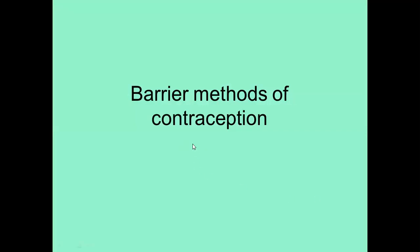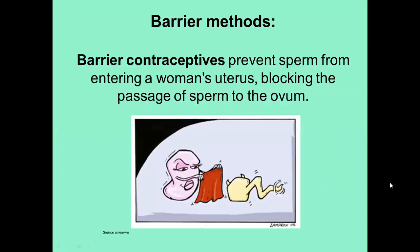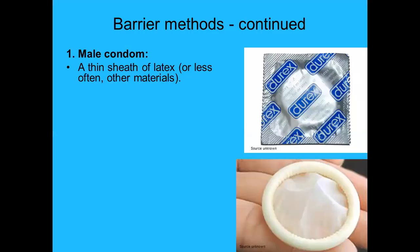We're going to look at barrier methods of contraception. These are any methods that prevent the sperm from entering the woman's uterus and block the passage of sperm to the ovum.